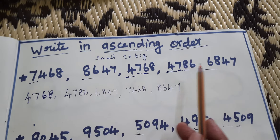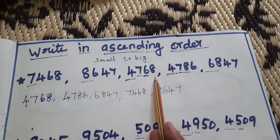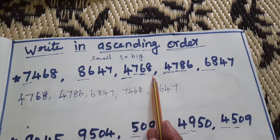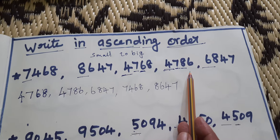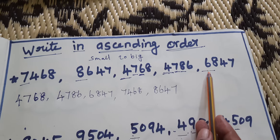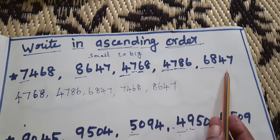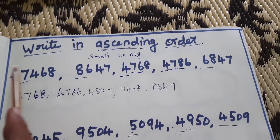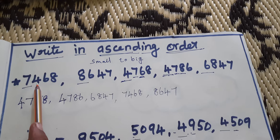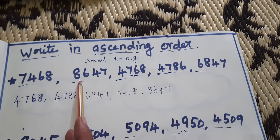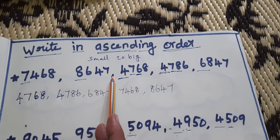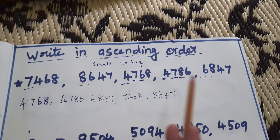Which one is the smallest number? 4768. Next, which is the smallest number? 4786. Then, 6847. Next, 7468. Last one, biggest number, 8647. Small to big.